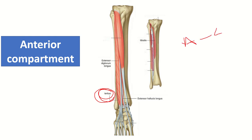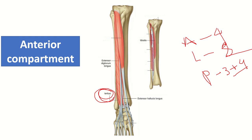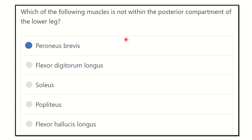In summary: the anterior compartment has four muscles, the lateral compartment has two muscles, and the posterior compartment has seven muscles — three superficial and four deep. Since peroneus brevis lies in the lateral compartment of the leg, the final answer is peroneus brevis, which is NOT a content of the posterior compartment of the leg. Thank you.